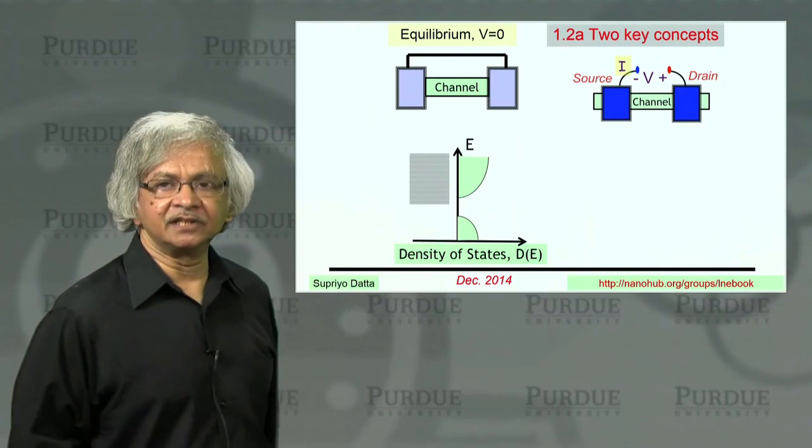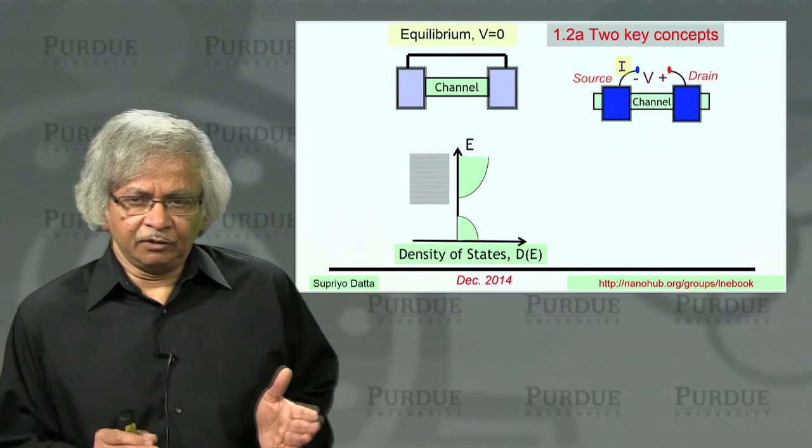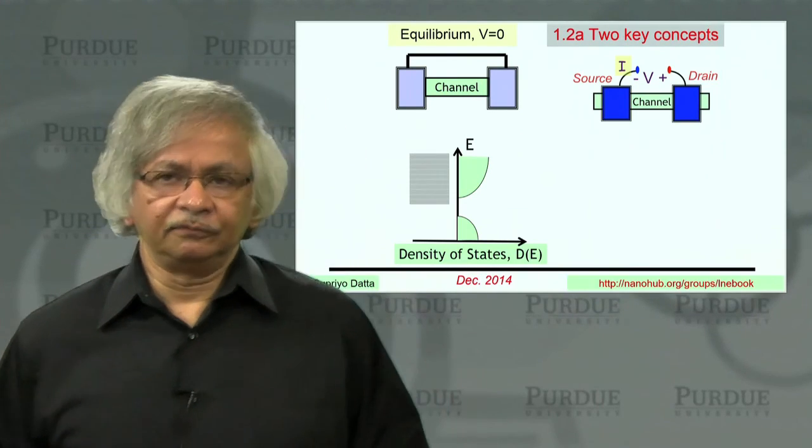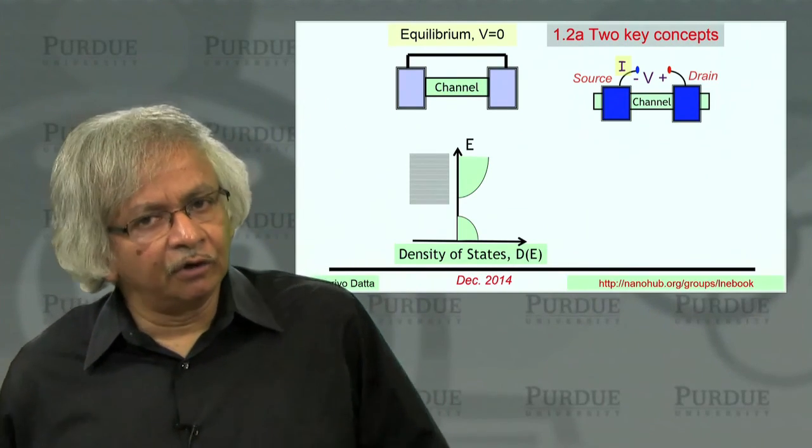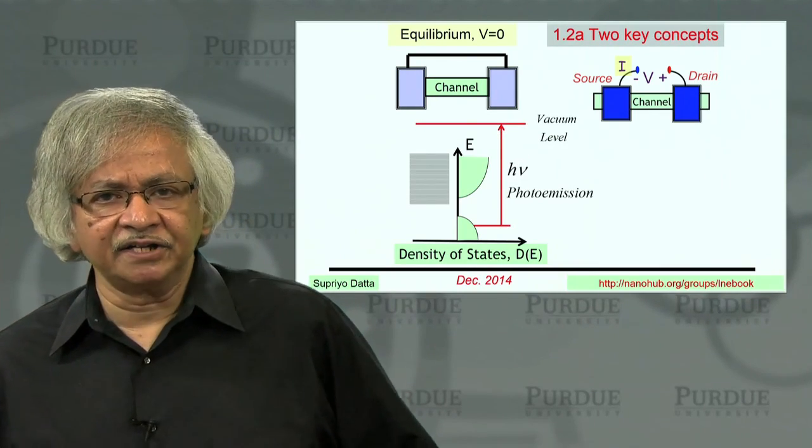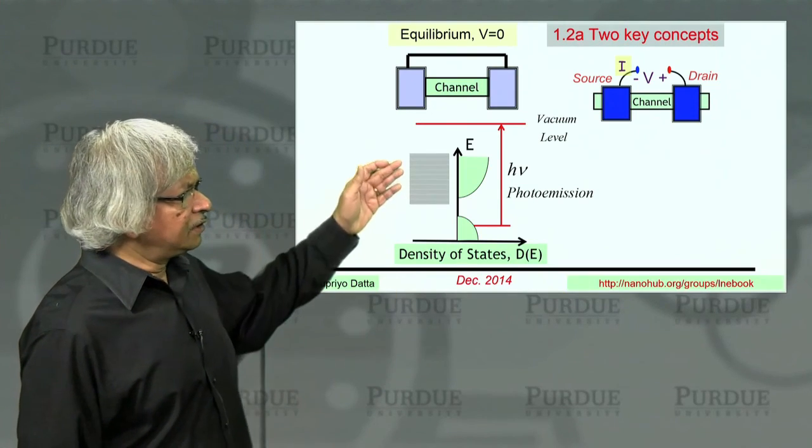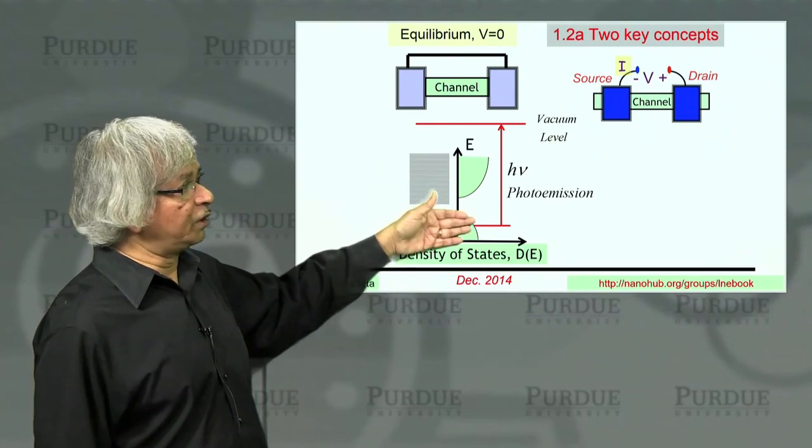So this is the density of states plot, the first thing you need when you want to talk about current flow in a device. So how do you know what's the density of states? Well experimentally you usually measure it using different types of experiments. The most common one is photoemission, for example.